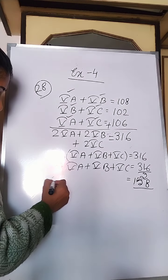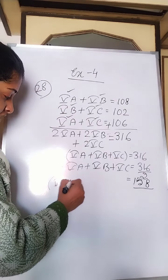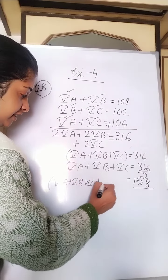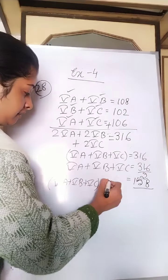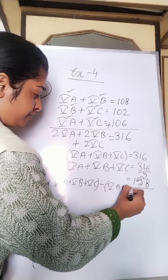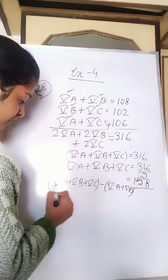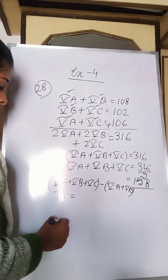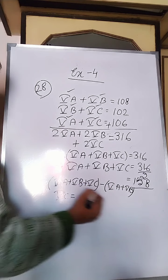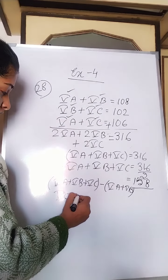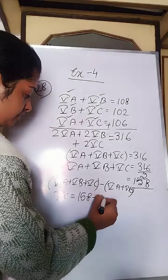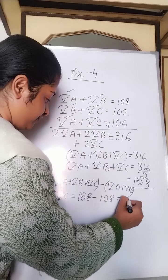From the total 5A plus 5B plus 5C, if we deduct 5A plus 5B, the remaining is 5C. So 5C equals 158 minus 108, that is 50. There are 50 students in section 5C.